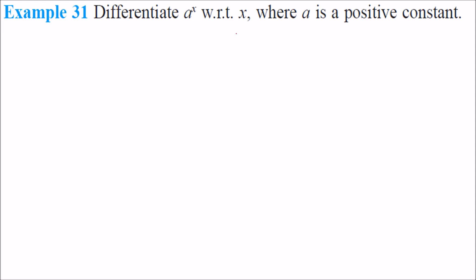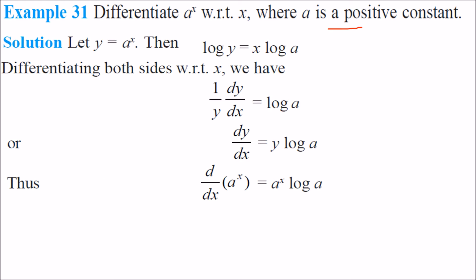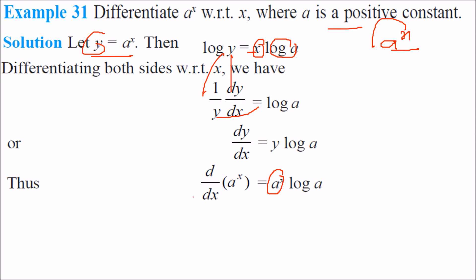Differentiate a to the power x with respect to x, where a is a positive constant. If we take log on both sides, it will be log y = x log a, since a^x gives x log a. When we differentiate, we get 1/y · dy/dx = log a, since log a is a constant and the differentiation of x is 1. So dy/dx = y · log a, and since y is nothing but a^x, we get d/dx of a^x = a^x · log a.